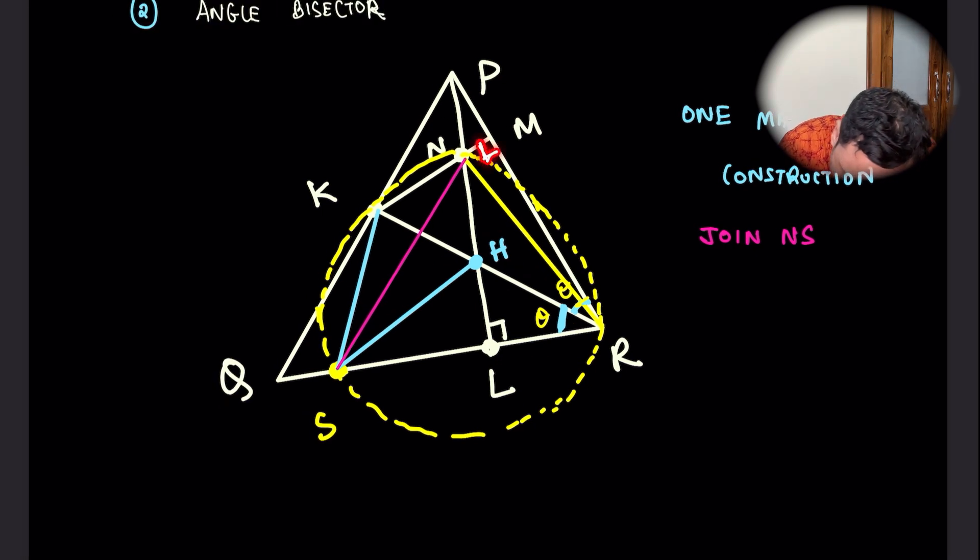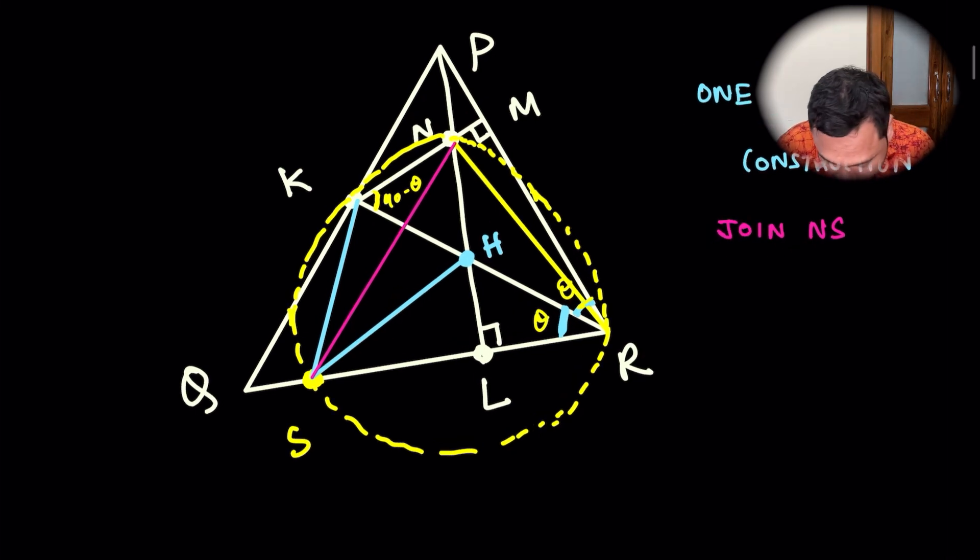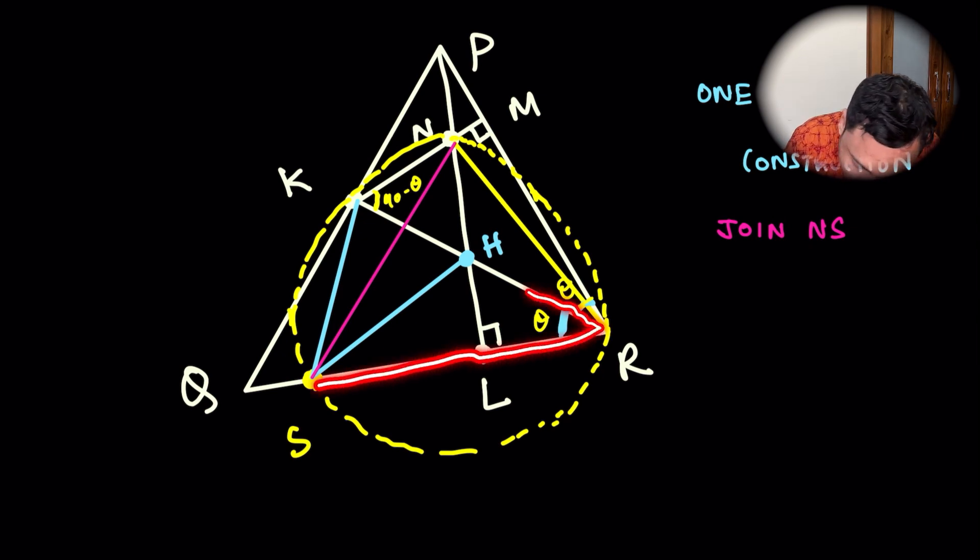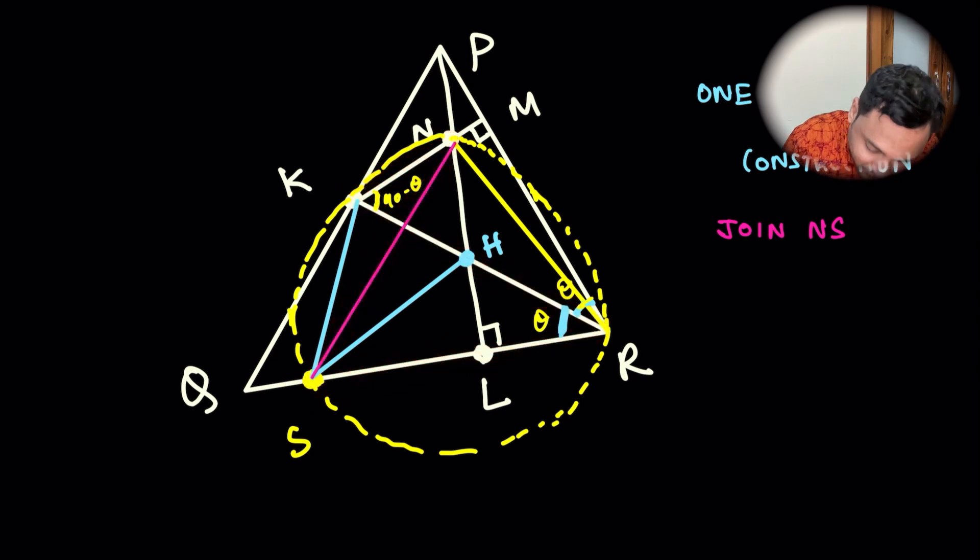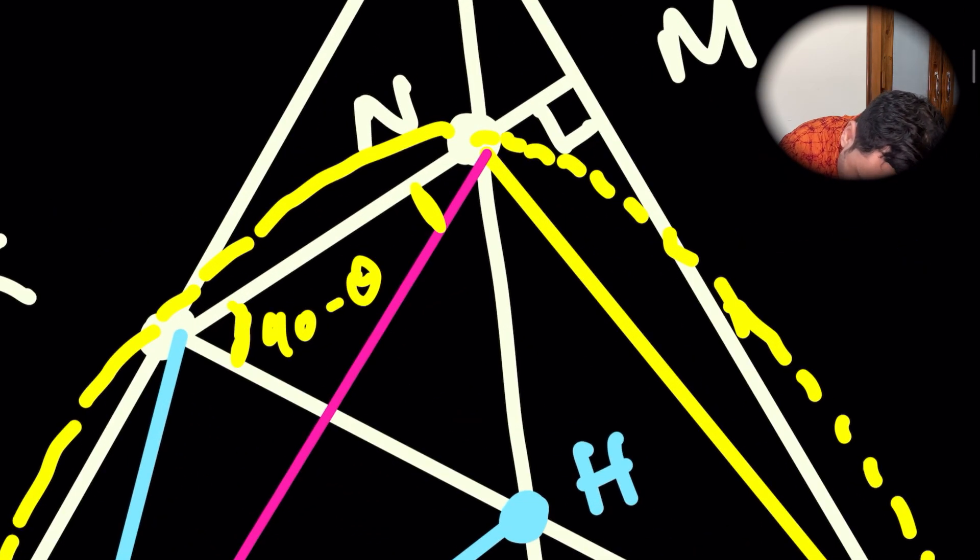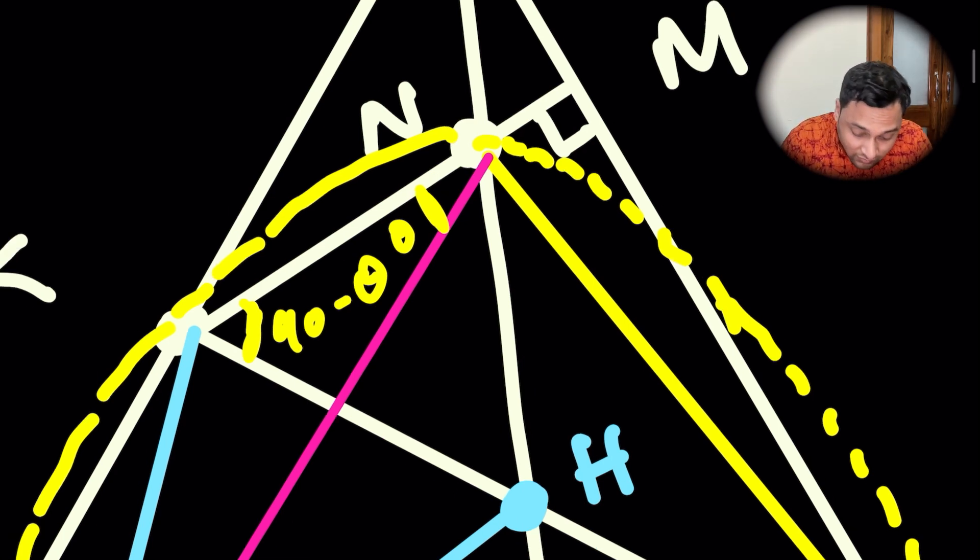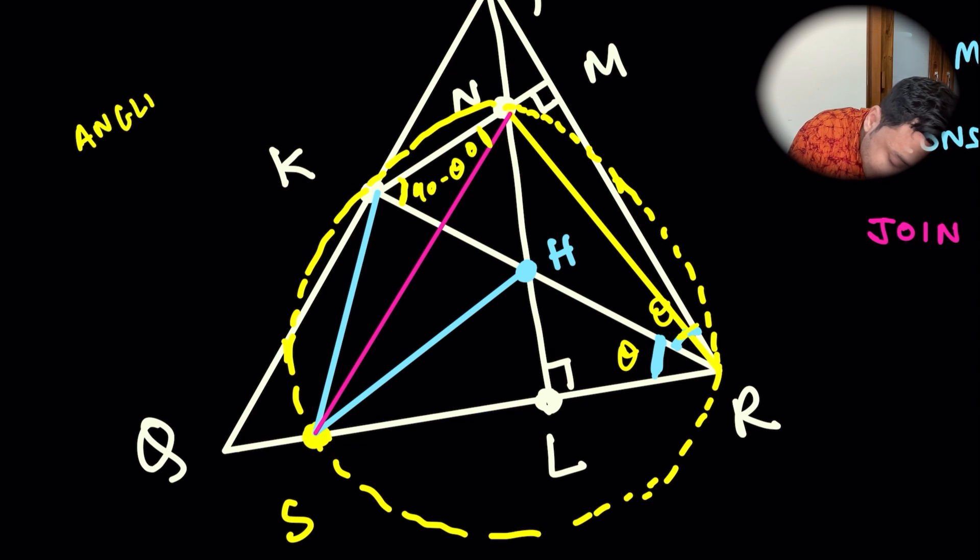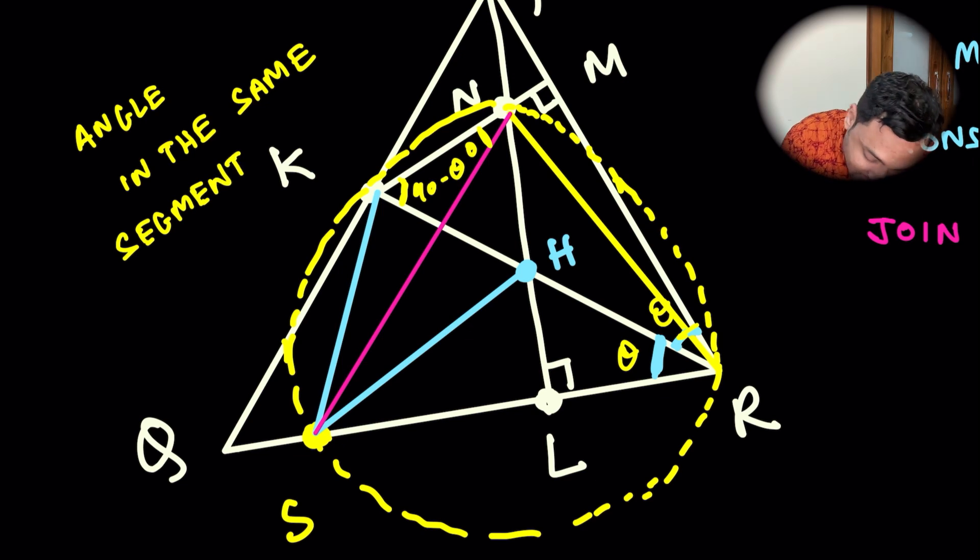Now, since this is 90 degrees and this is theta, therefore this is 90 minus theta. And we also know that since this angle is theta, this angle is theta, therefore this angle is also theta. Here, this is theta. Why is that? Well, because it's angle in the same segment. And what is the segment here? The segment is KS.